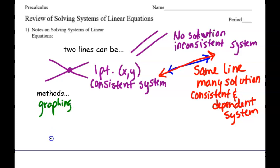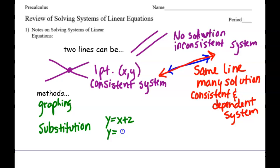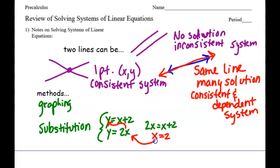Then we're going to do substitution. For example, if it said y equals 2x as part of our system, you could substitute the 2x in here, so you'd have 2x equals x plus 2. You would take this and put it in there, then solve. Then you would plug that back in and get y equals 2 times 2, or 4, and you would say they intersected at ordered pair 2, 4.